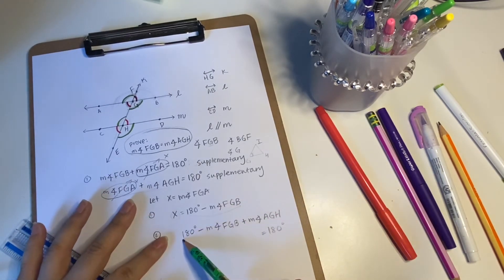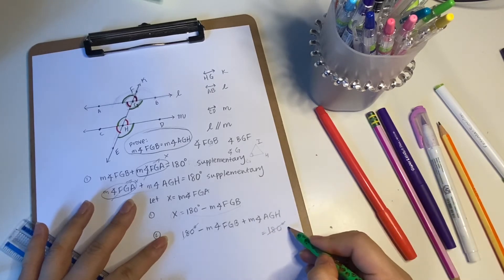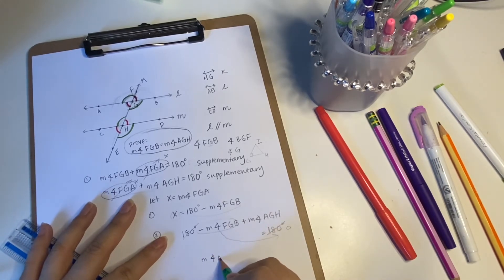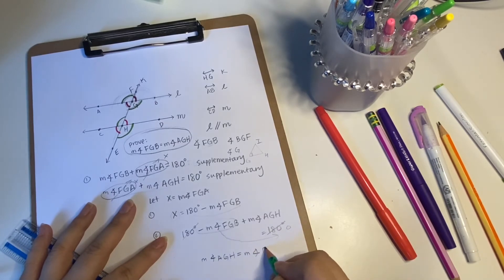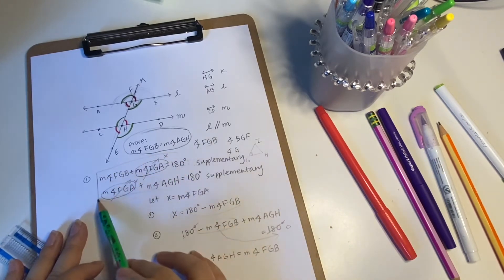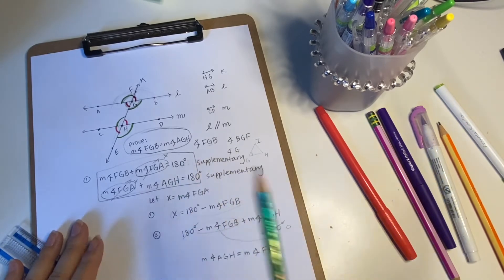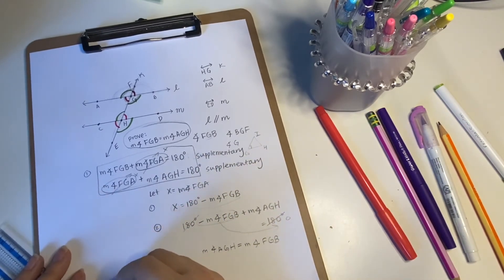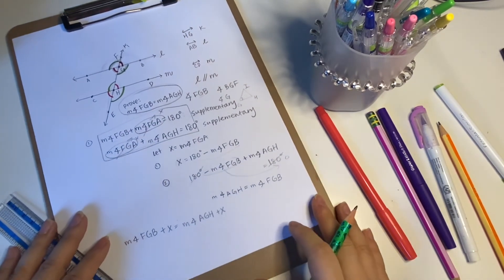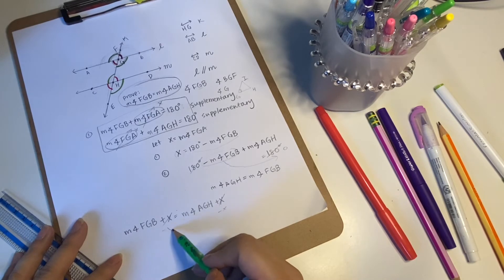And then at this point, you can subtract 180 on both sides. So this becomes zero. And you can move this over here. So you get measure of angle AGH equals measure of angle FGB. And now that I wrote it out by substitution, I actually also realized you can just set the two 180s equal to each other. So you'd have measure of angle FGB plus X equals the measure of angle AGH plus X. And so you could just cancel the X on both sides. And then you're left with the measure of this angle equals the measure of this angle.